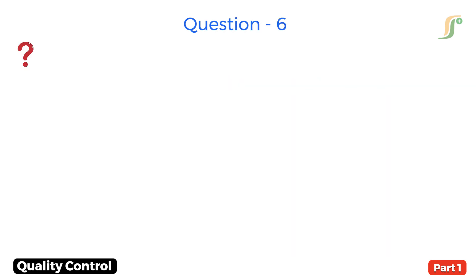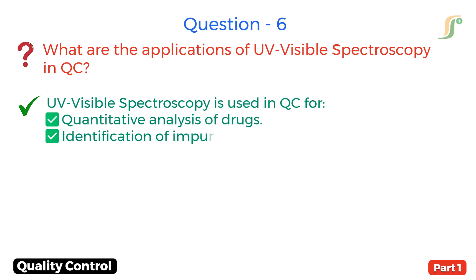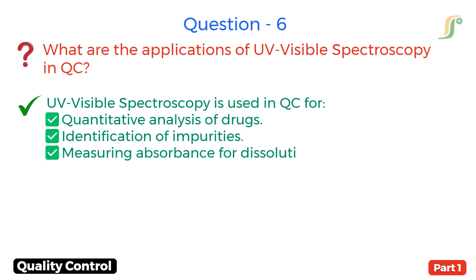Question 6. What are the applications of UV-visible spectroscopy in QC? Answer. UV-visible spectroscopy is used in QC for quantitative analysis of drugs, identification of impurities, and measuring absorbance for dissolution studies.